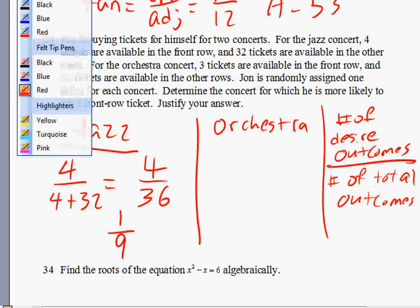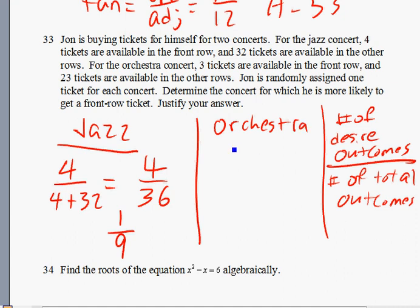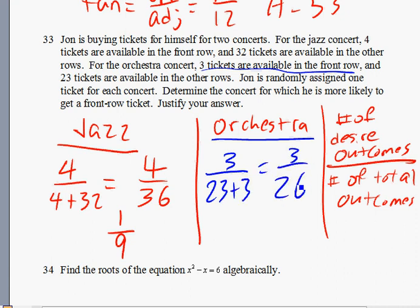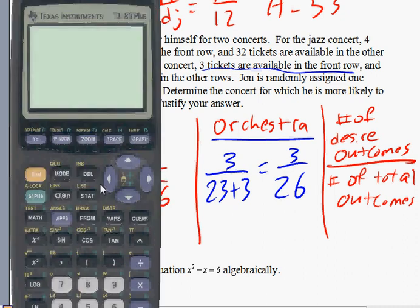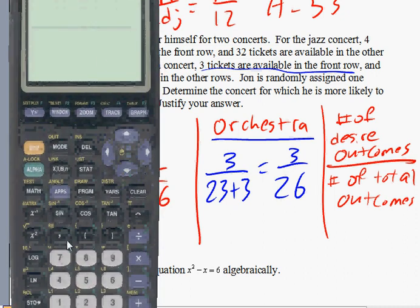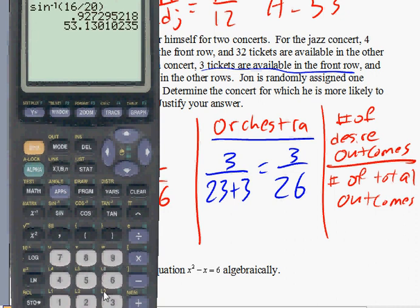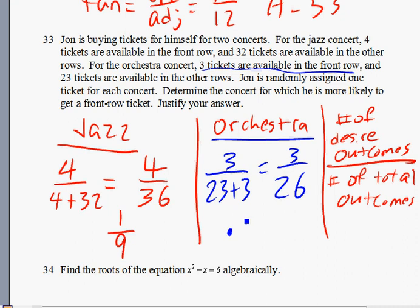Now onto the second part. Let's do orchestra. For orchestra, we have three tickets available in the front row. That's three tickets I want out of a total of how many tickets available? Twenty-three plus three. That's three out of twenty-six. Let's reduce that down. Let's take out the calculator for that. Three divided by twenty-six. Point one-one-five, approximately point one-one-five.